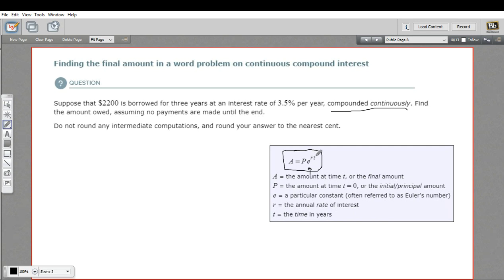Let me show you how that works in this particular problem. It says suppose that $2200 is borrowed, so that's our principle. In this case we're not calculating money we're going to earn off of a bank account, we're calculating money we owe from a loan. So we took out $2200 and we're going to borrow that for three years and then pay the whole thing back, not making any payments in the meantime.